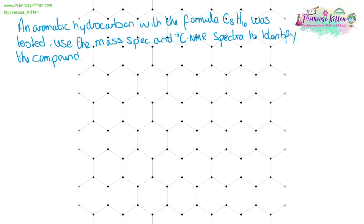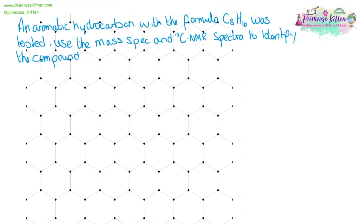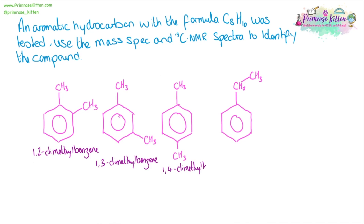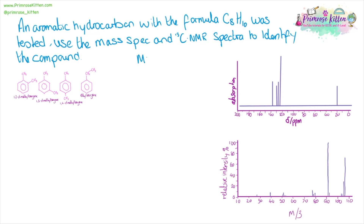An aromatic hydrocarbon with the formula C8H10 was tested. Use the mass spec and carbon NMR data to identify the compound. The first thing I'm going to do is draw out all of the different aromatic hydrocarbons with the formula C8H10. Even if you can solve this using just one piece of information, you must refer to all the information in your answer.